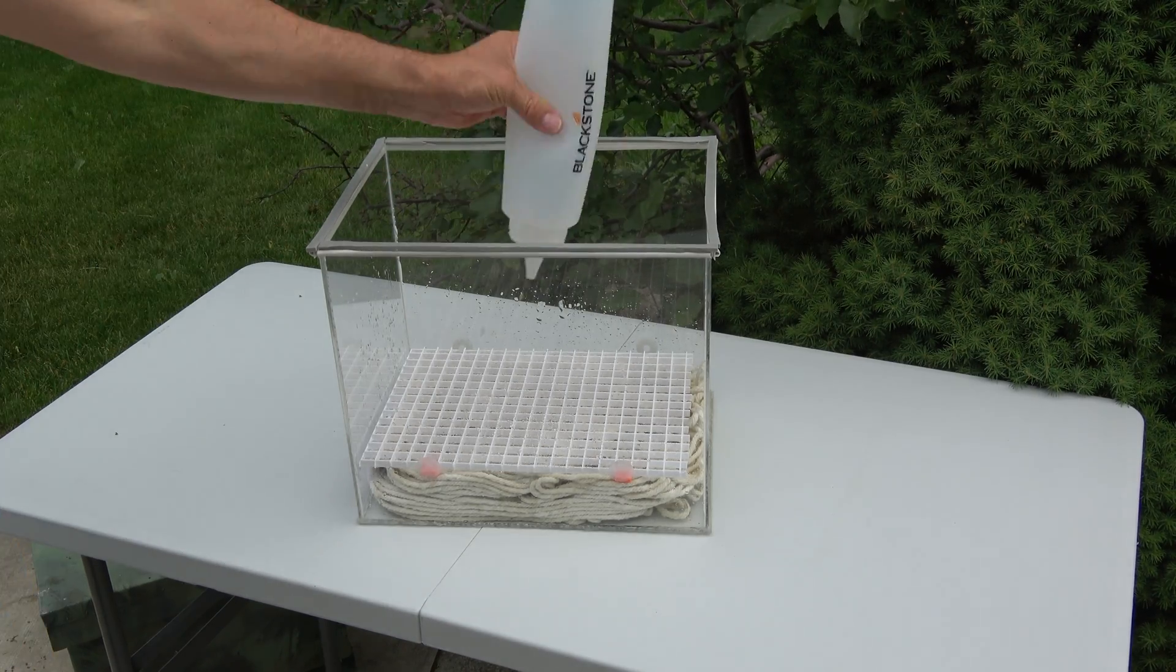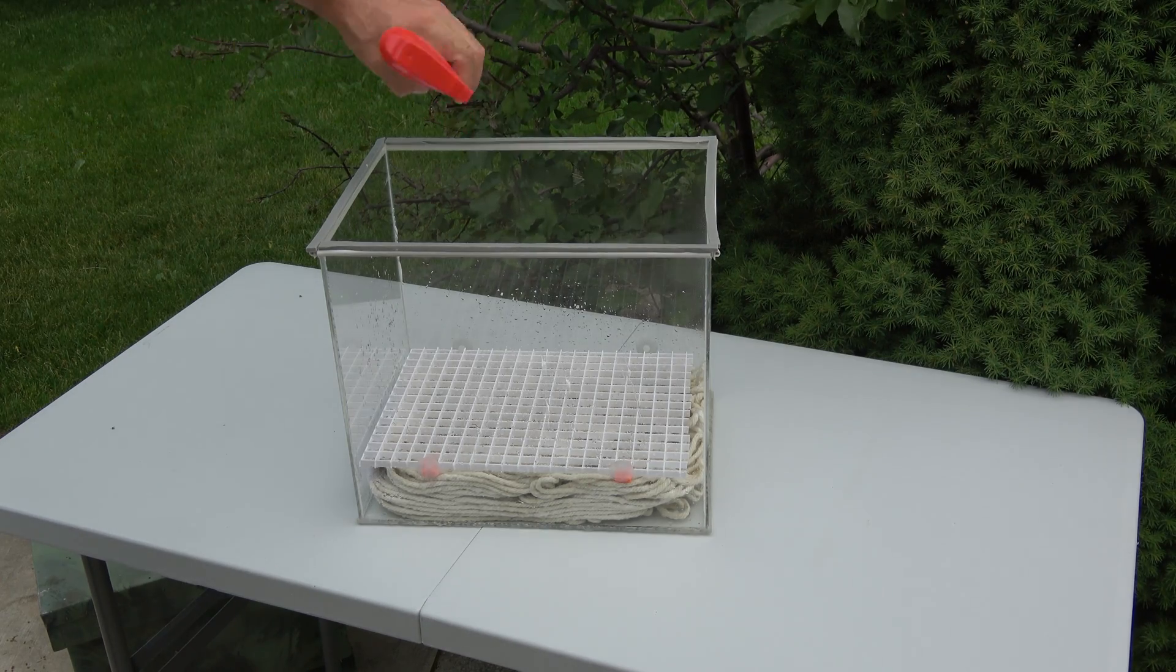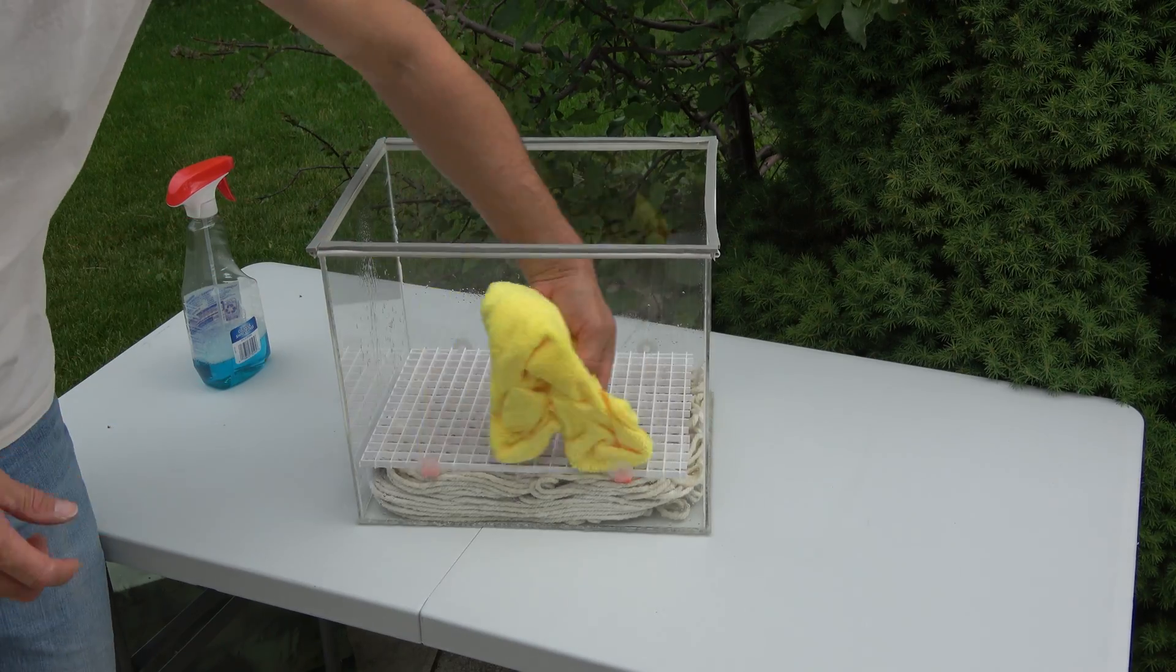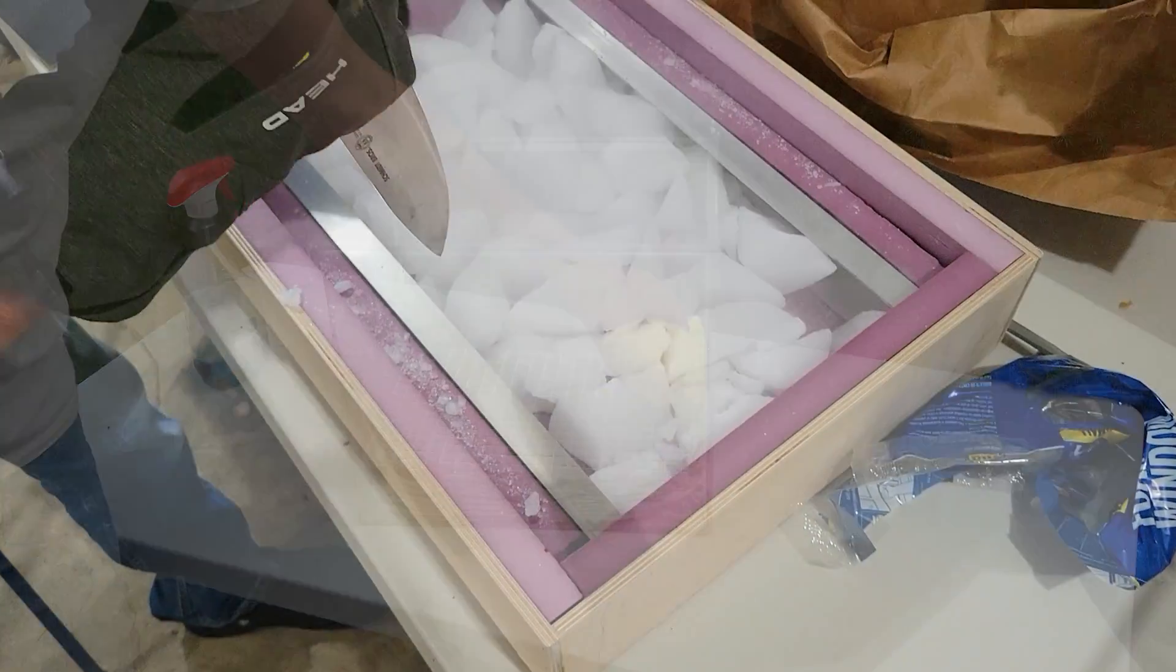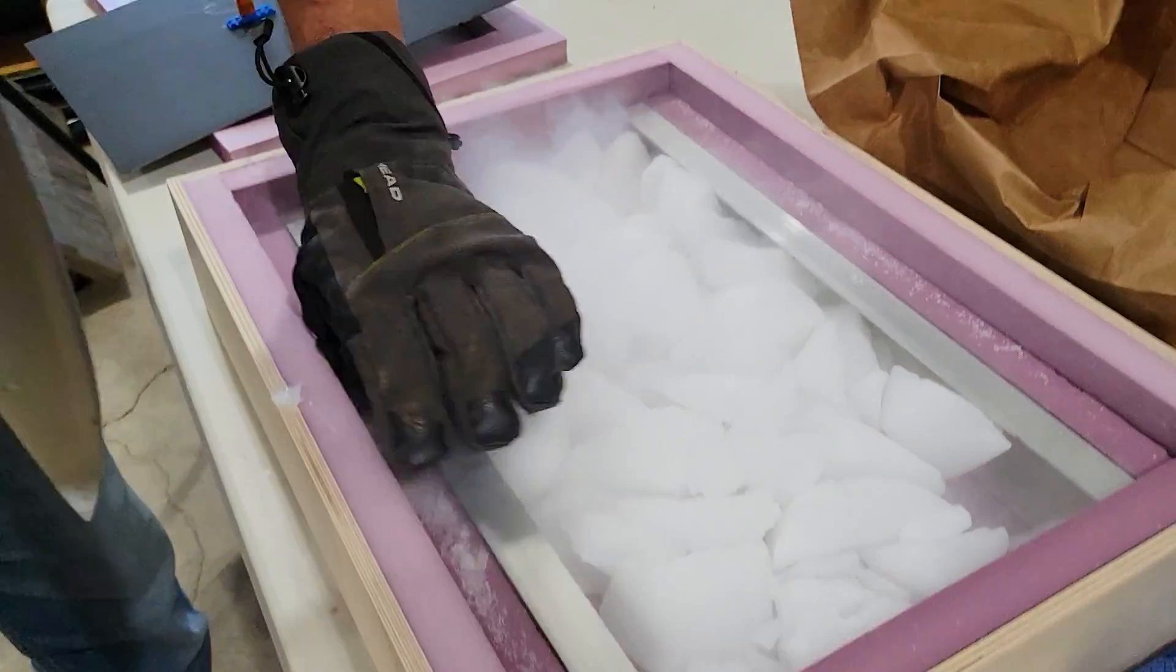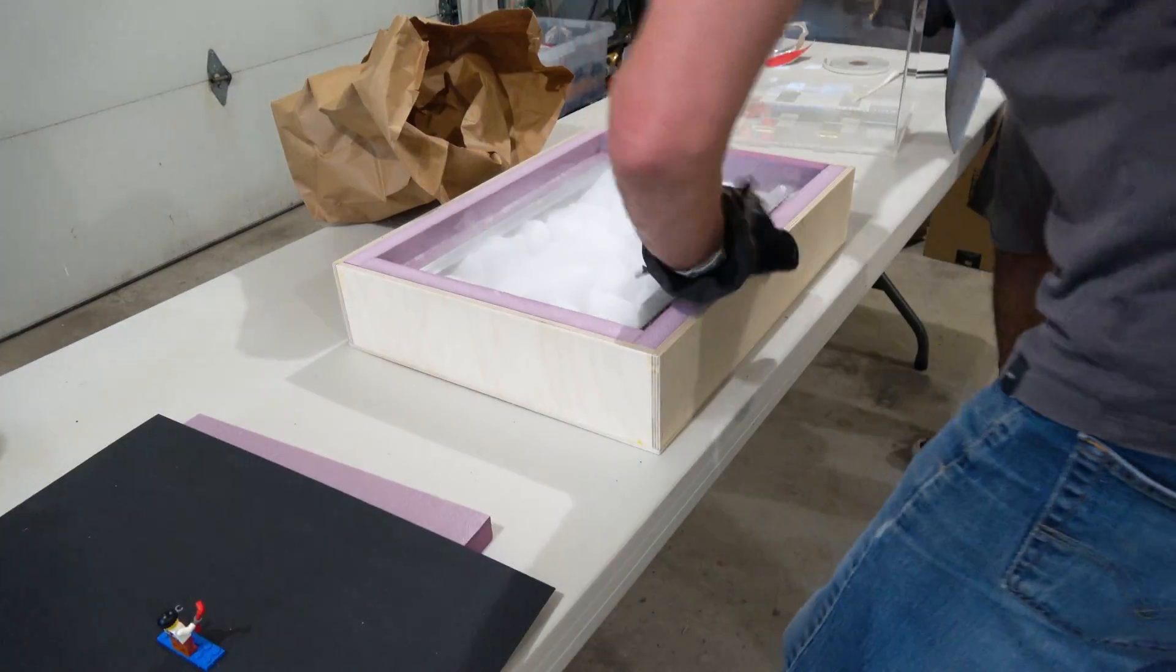Then we cleaned the inside of the tank glass with Windex. That step is super important. It helps you see the trails clearly later on. We placed the dry ice in our insulated box, and used a knife to trim it, so our steel plate sat just right on the spacers.